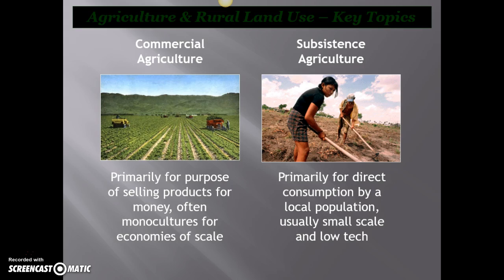Subsistence agriculture, on the other hand, is done for consumption by the local population. It's typically small scale, typically low tech, and most frequently found in less developed areas of the world. That's not to say you can't find subsistence agriculture here in the US, but most typically when we're talking about it, it's those less developed places, and what they're growing is going to be eaten within a 10 or 20 mile radius of where it's grown.